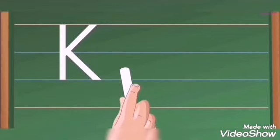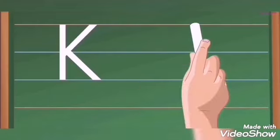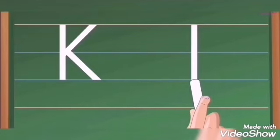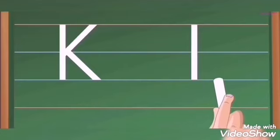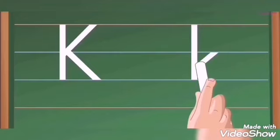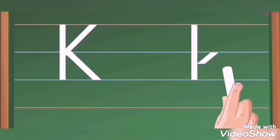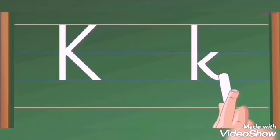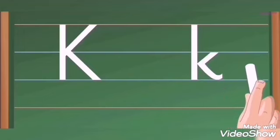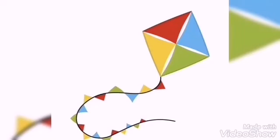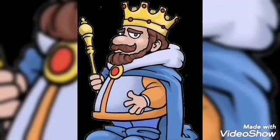Line number four, ignore — we don't need it. Capital K. Now, small k. I'm going to write one from line number one until line number three. Then from line number two, I'm going to write number two in a manner, and I'm going to write another one again until line number three. Kite.